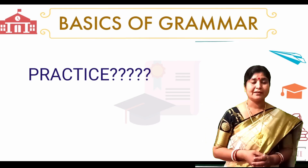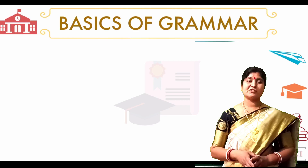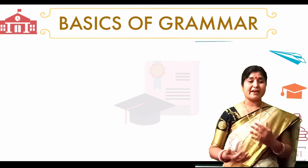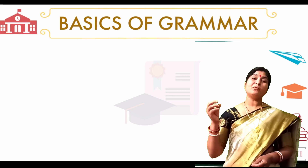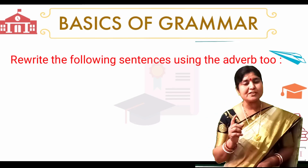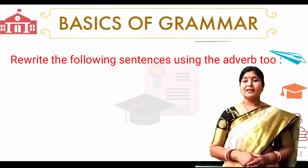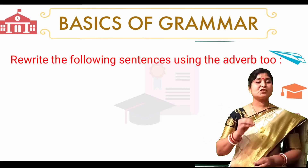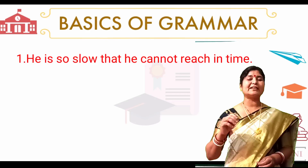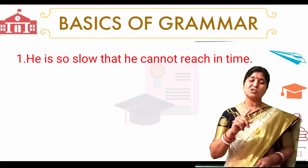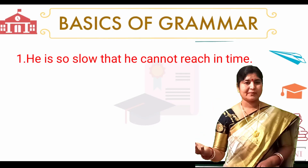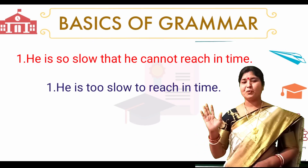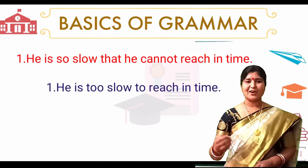We have completed the first exercise — rewriting sentences without the adverb 'too'. Now we will do another exercise where we have to rewrite the following sentences using the adverb 'too'. Question number one: 'He is so slow that he cannot reach in time.' The answer is: 'He is too slow to reach in time.'